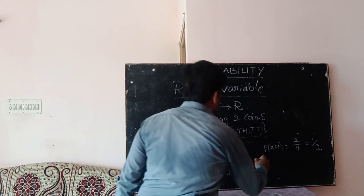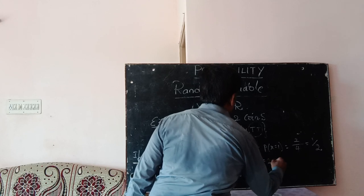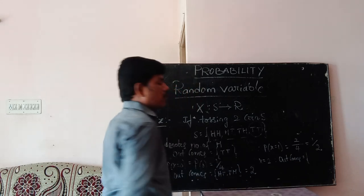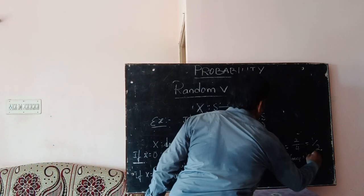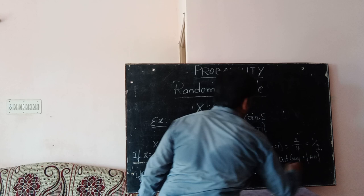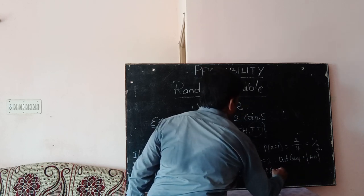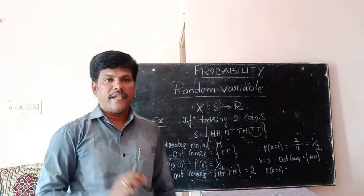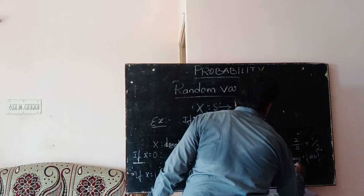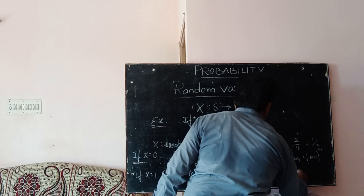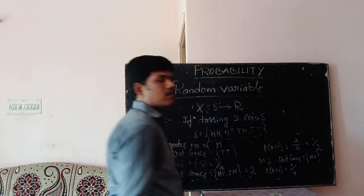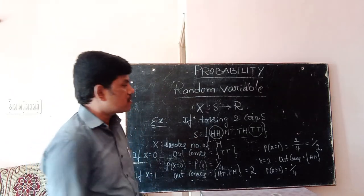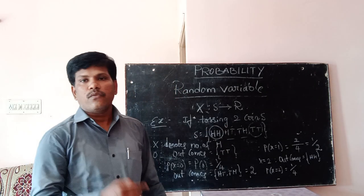Now, if we take X equals two, there is only one outcome: head-head. Therefore, P of X equals two — the probability of getting two heads — is one by four, since the number of favorable cases is one and the total number of cases is four.